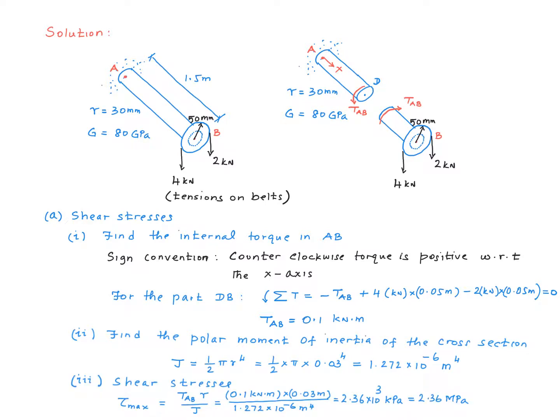Now we can use the torsion formula to calculate the shear stresses. So let's calculate tau max first. Tau max is TAB times r over J, where r is the maximum radius of the cross section, which is the radius of the shaft, which is 30 millimeter. So we have values for each of the parameters in that equation. You substitute them in consistent units. And we come up with 2.36 multiplied by 10 to the 3. And the units will be kilopascal. You see kilonewton here. And this meter and that meter gives you meter squared in the numerator. Meter to the power of 4 in the denominator. So we get kilonewton per meter squared, which is kilopascal. And since we have this multiplier here, we could express this as a megapascal. So maximum shear stress in the cross section is 2.36 megapascal.